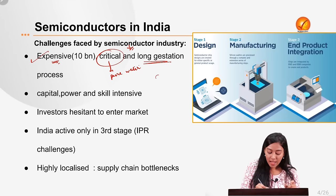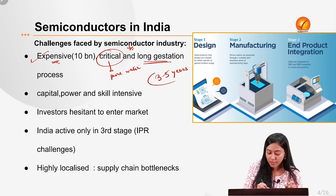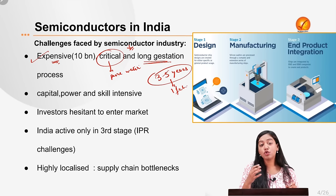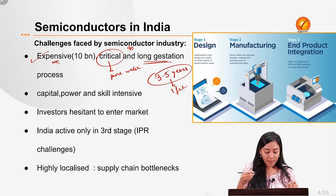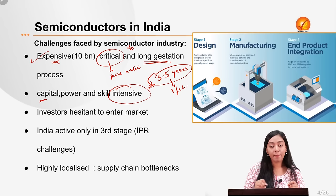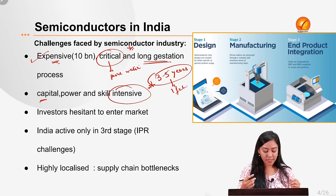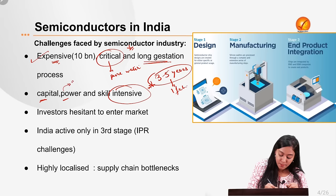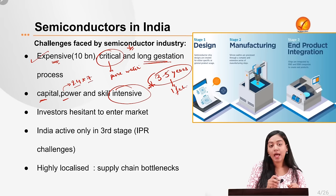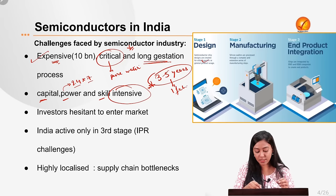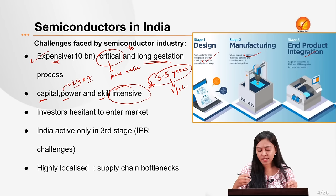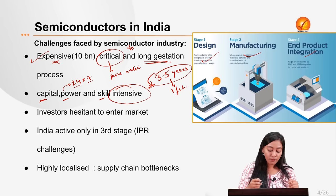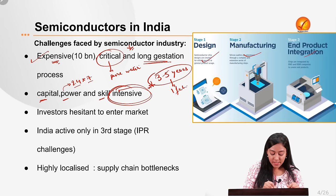It also has a high gestation period — manufacturing one fab or chip takes an average of three to five years — so returns come only in the longer run. The industry is capital-intensive, power-intensive requiring 24/7 power supply, and skill-intensive, driven at all stages by highly skilled engineers who must continuously upgrade themselves as the industry itself continuously evolves.